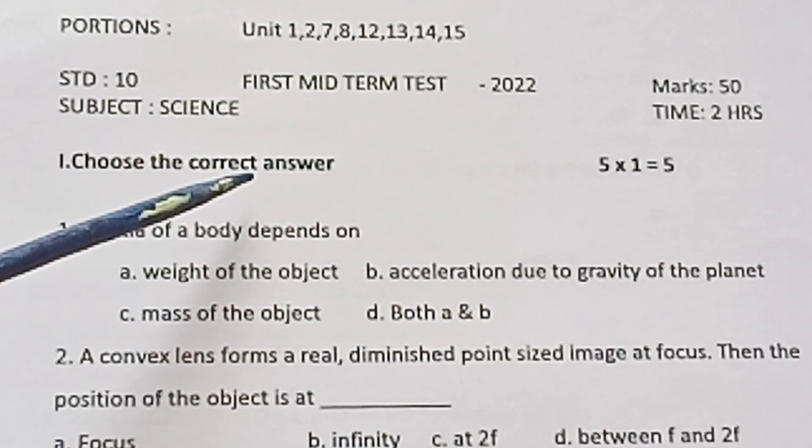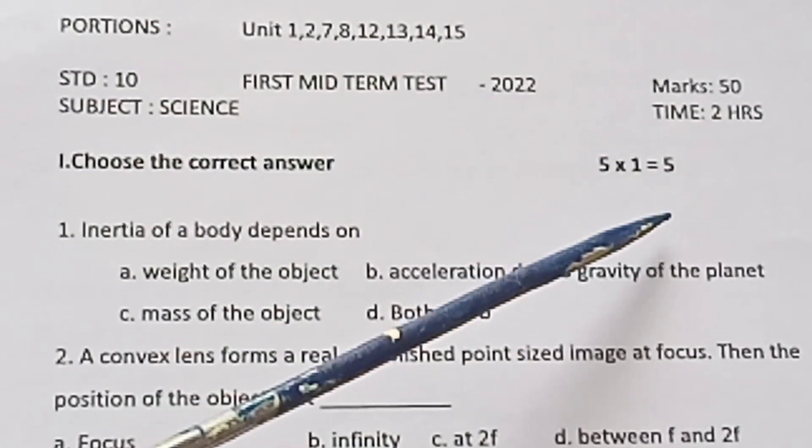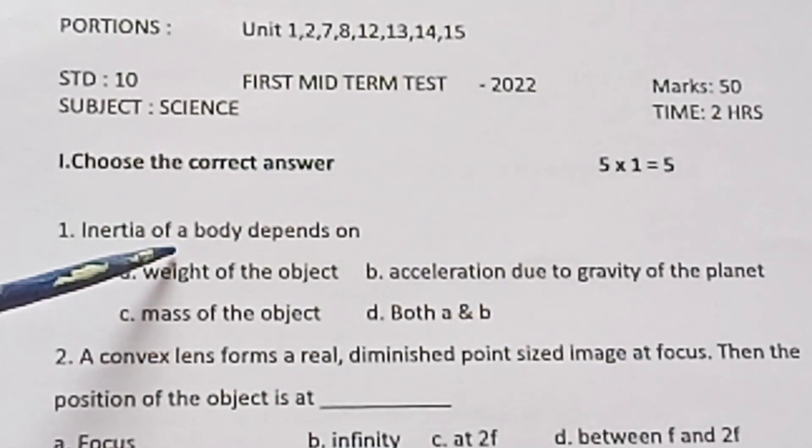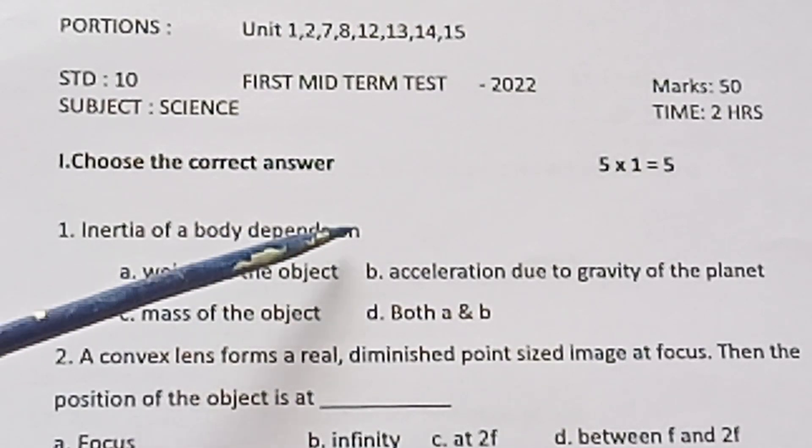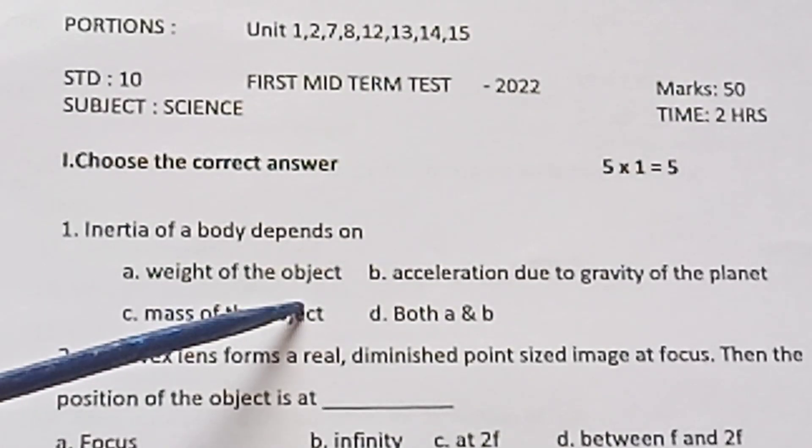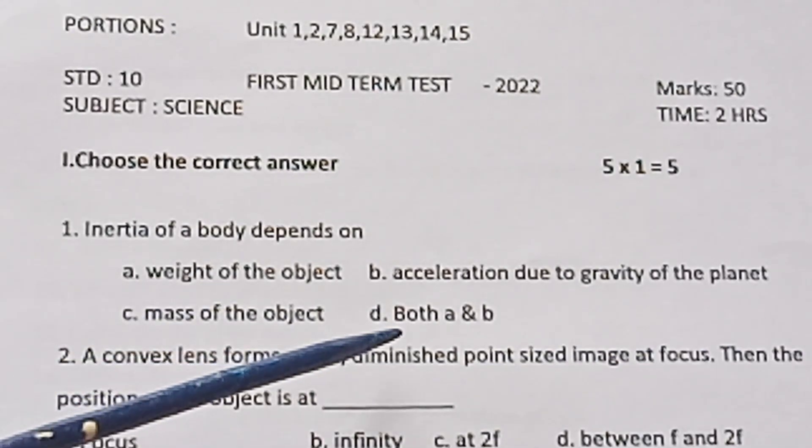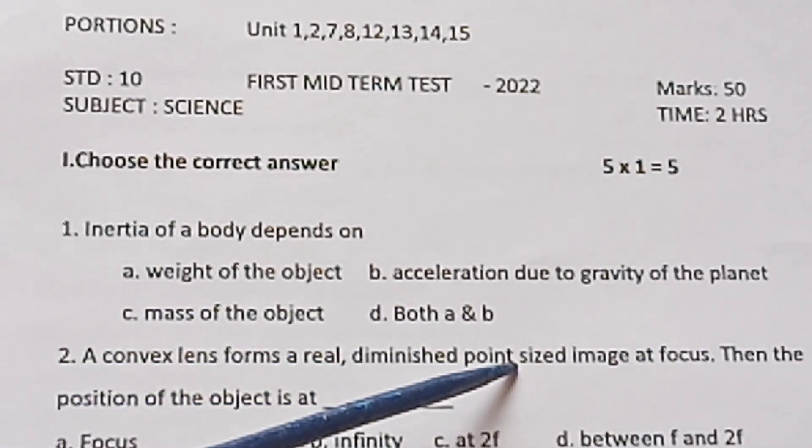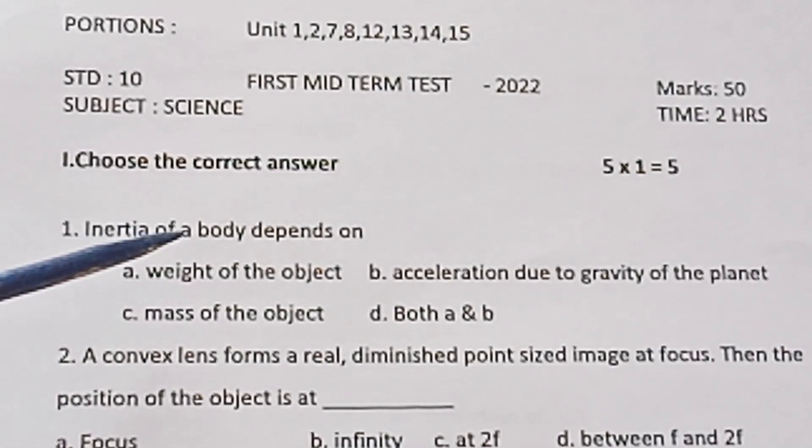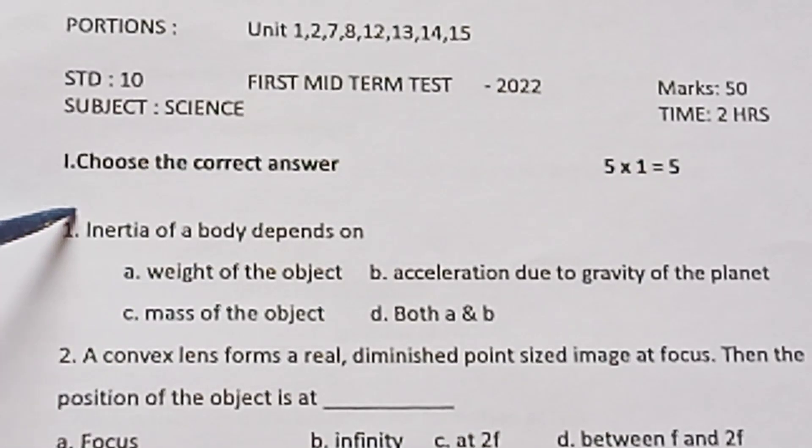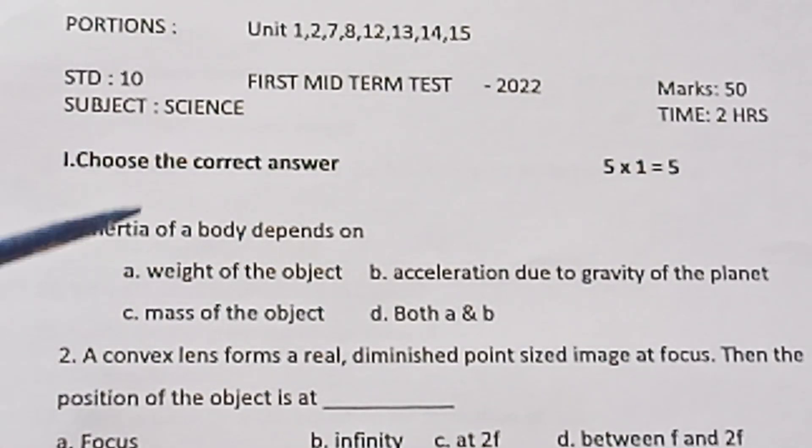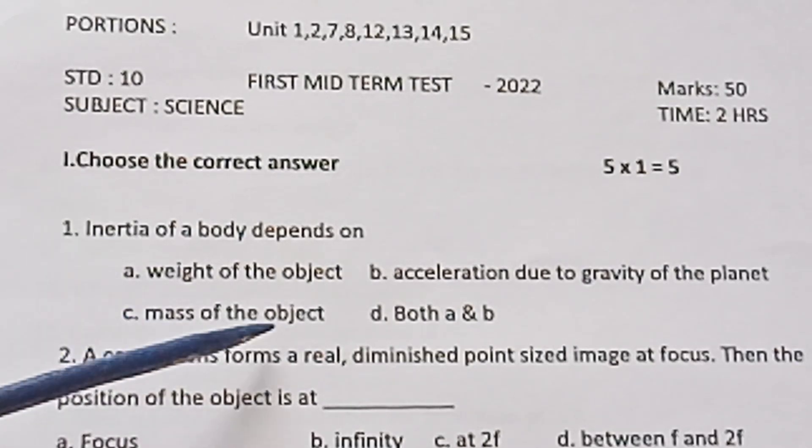Problem number 1. Choose a correct answer. 5 into 1 is equal to 5. Inertia of a body depends on weight of the object, acceleration due to gravity of the planet, mass of the object, D, both A and B. The correct answer is C, mass of the object.